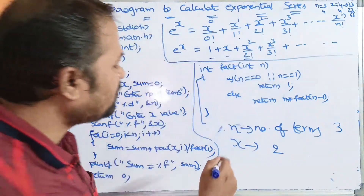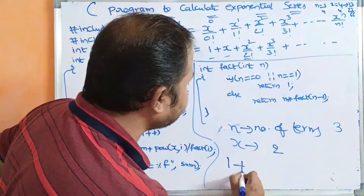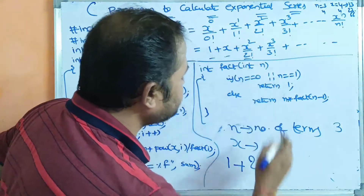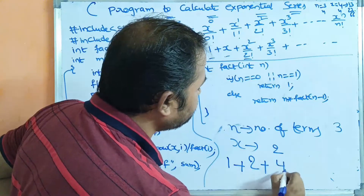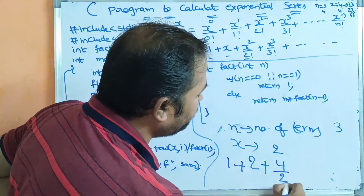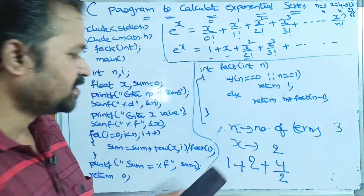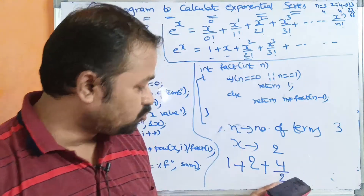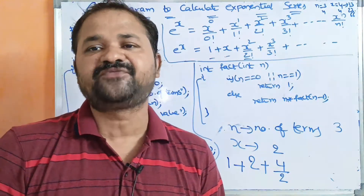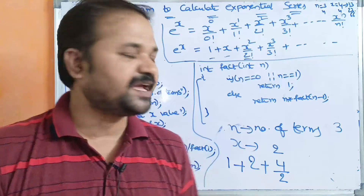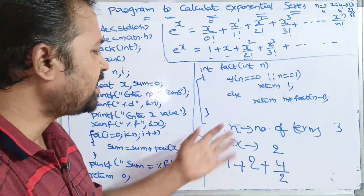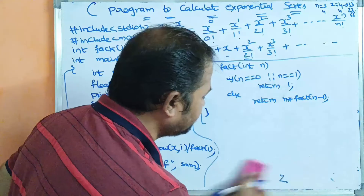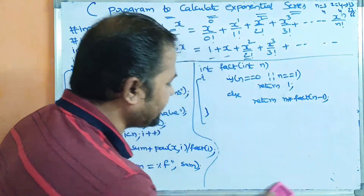So what is the output we will get? 1 plus x means 2, plus x square means 2 square. So 2 square means 4 by 2 factorial means 2. So 1 plus 2 means 3, 3 plus 2 means 5. So we will get 5 as the output. Here the input variables are n and x — n for number of terms and x for the x value.